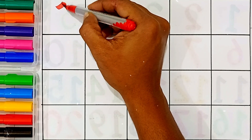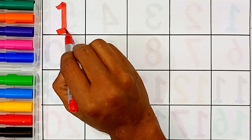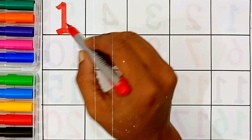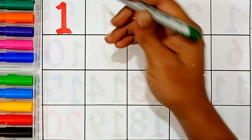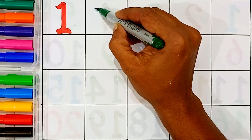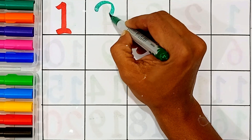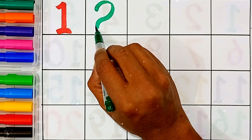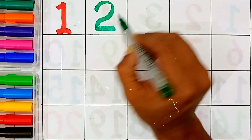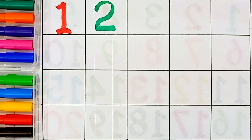1 — this number name is 1, this is the first number. 2 — this number name is 2, second number.